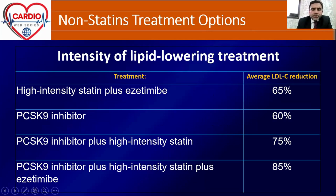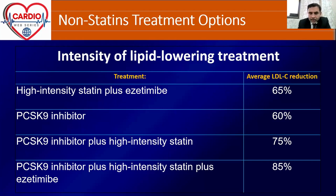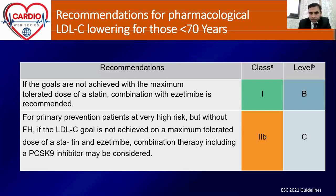The available agents are: ezetimibe, PCSK9 inhibitors, PCSK9 inhibitors plus high-intensity statin, and the triple combination of PCSK9 inhibitors plus high-intensity statin plus ezetimibe. High-intensity statin plus ezetimibe achieves approximately 65% LDL reduction — excellent since our goal is 50%. PCSK9 inhibitors alone achieve 60% reduction; combined with statin, 75%; and the triple combination — high-intensity statin plus ezetimibe plus PCSK9 inhibitor — achieves up to 85% reduction, essentially eliminating LDL from the body.